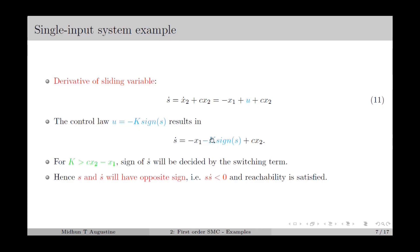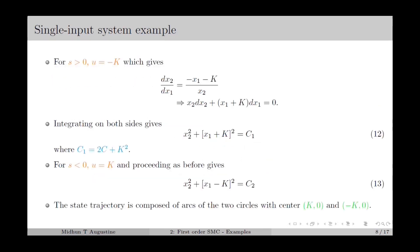If we select the control input u as a switching term and select the value of k sufficiently large — specifically if k is greater than cx2 minus x1, making k the dominant term — then the sign of s-dot will be decided by this switching term. In that case, if s is positive, then minus k times signum(s) will be negative, making s-dot negative, which ensures s times s-dot is less than 0, and thereby reachability is satisfied.